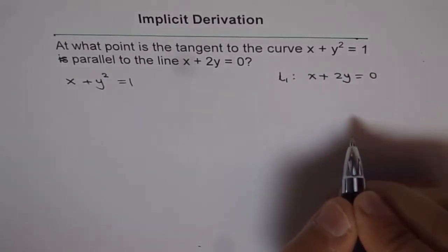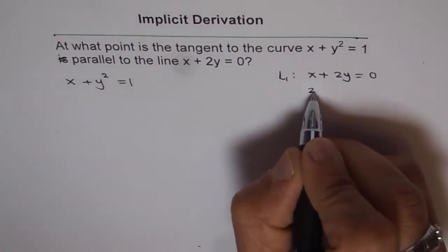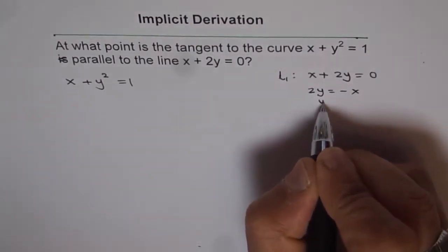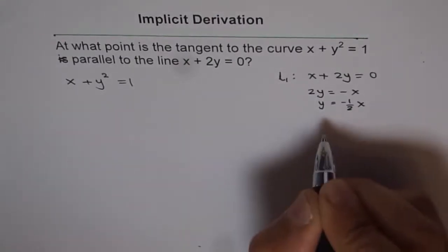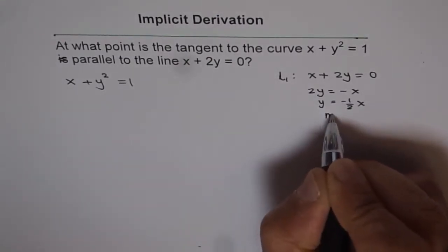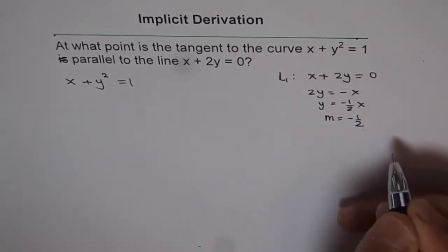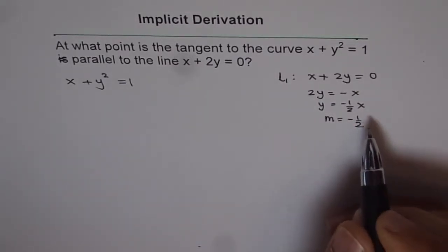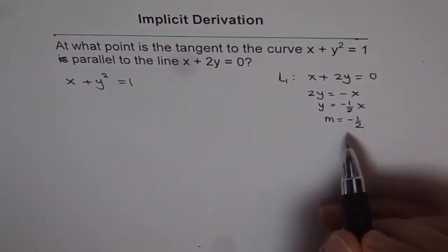Now, what is the slope of this line? We can write this in slope-intercept form. So we get 2y equals minus x, or y equals minus half x. Therefore, the slope of this line is minus half. So basically we are trying to find a point on this curve where the tangent has a slope of minus half.